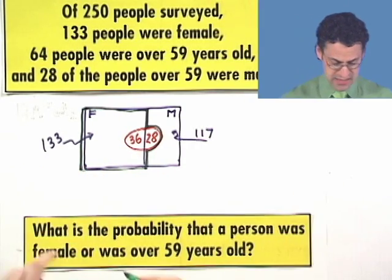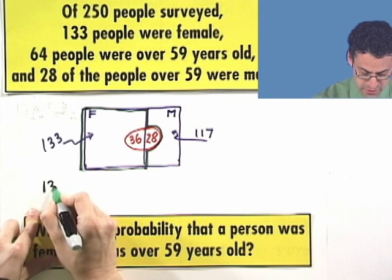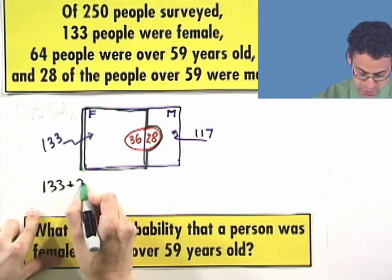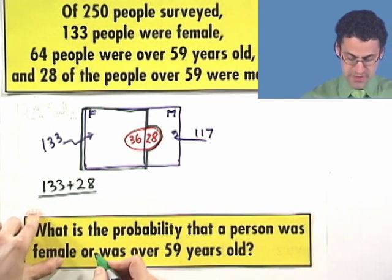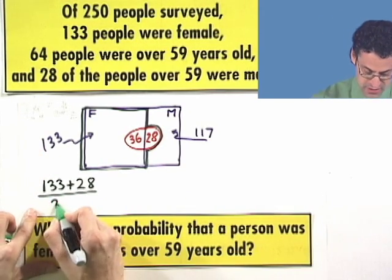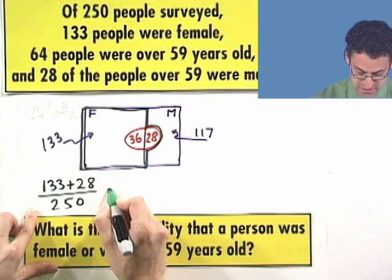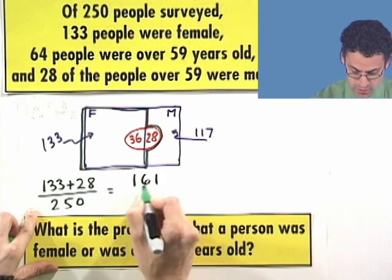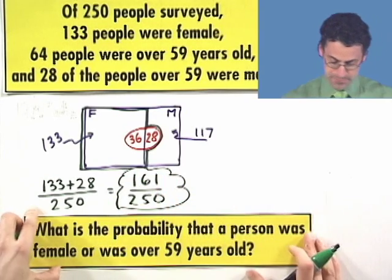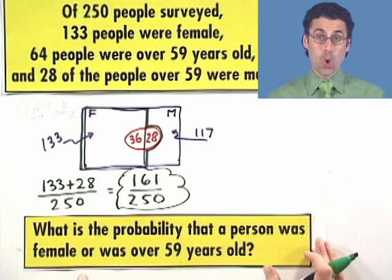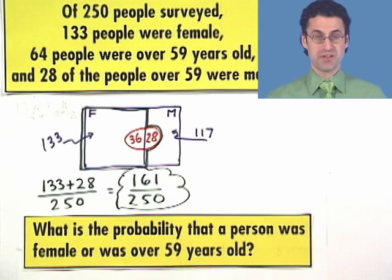So, what's the probability? Total number of success is going to be 133 plus the 28 males that are over 59, divided by the total number of people, which is 250. And so, we see 161 over 250. And that represents the probability that a person was female or the person was over 59 years old. Very, very cool.